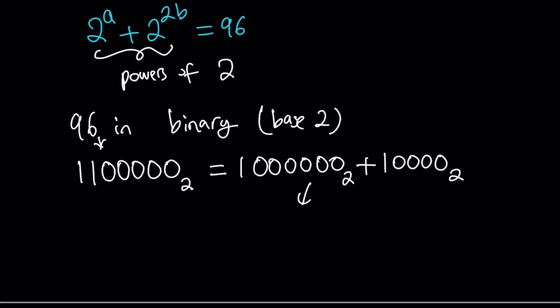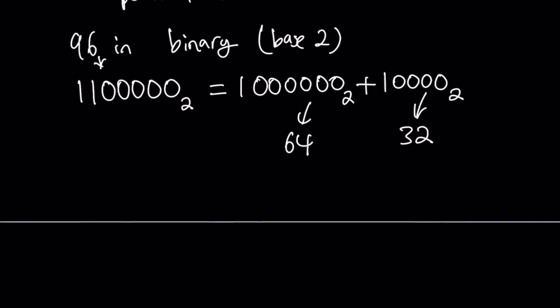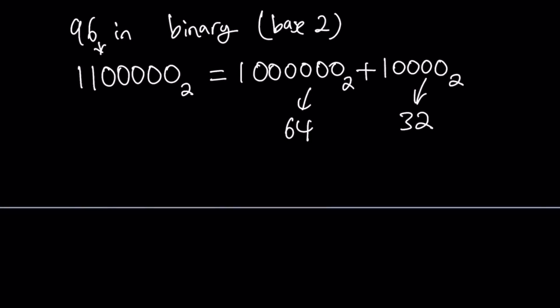And notice that both of these are powers of 2. And what are they? Well, this one is 64 if you convert it to decimal, and this one is going to be 32. In other words, a number can be written as a sum of powers of 2 in only one way. And that is unique. So we got 64 plus 32 equals 96.